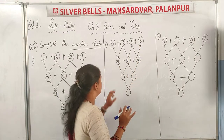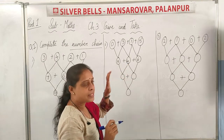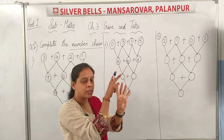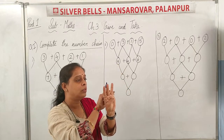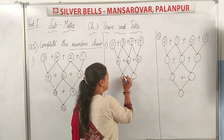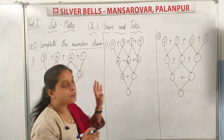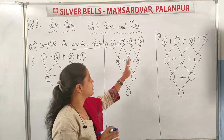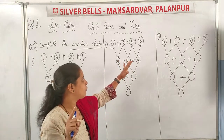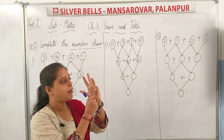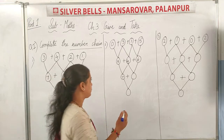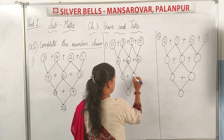Again you can do addition. 3 plus 4 — you hold up 4 fingers and start counting: 4, 5, 6, and 7. So 3 plus 4 is 7. Next, 4 plus 6 — hold up 6 fingers, and start counting after 4: 5, 6, 7, 8, 9, and 10. So 4 plus 6 is 10.